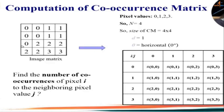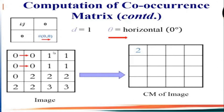We calculate the values as follows. For element C00 — the number of times 0 appears to the right of gray level 0 — starting from the top left corner: the pixel is 0 and its neighbor is also 0, so that is the first pair. Scanning through all rows, we find two such pairs in total. So C00 is substituted with the value 2.